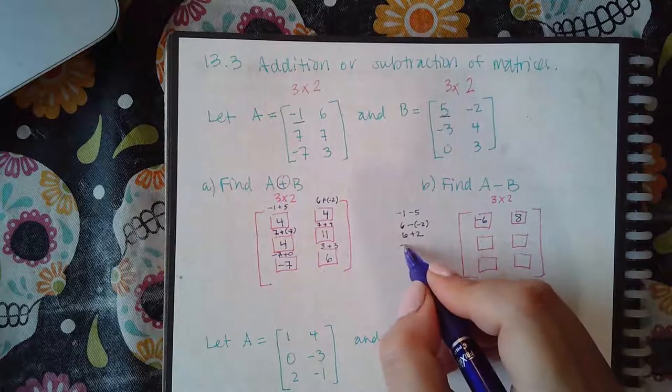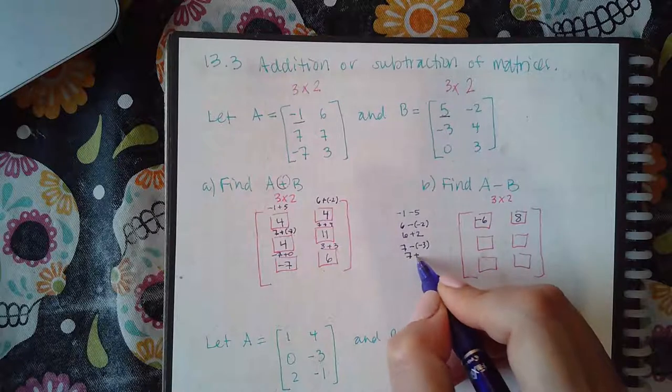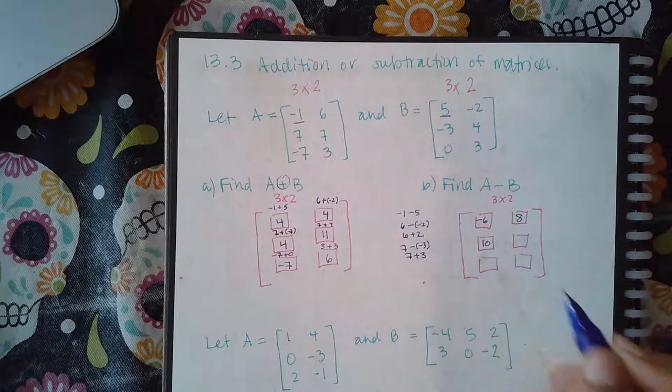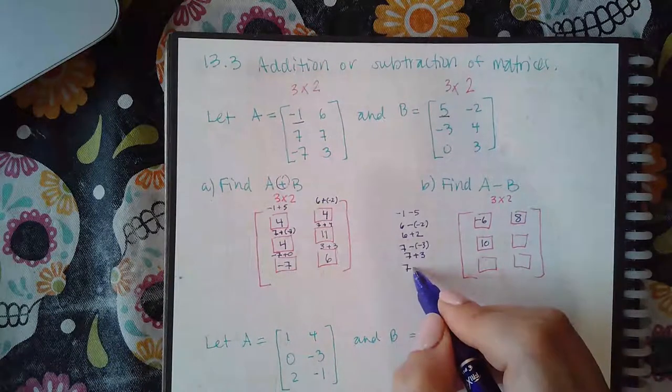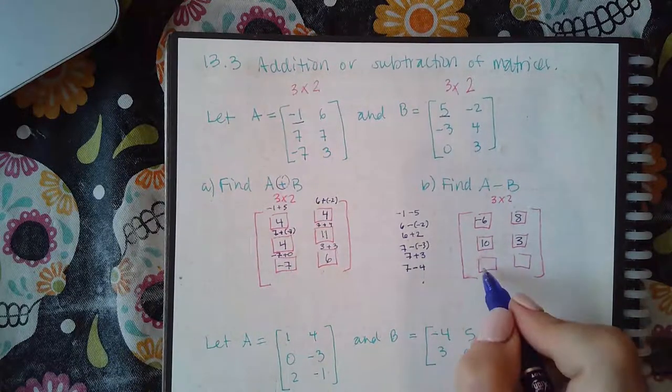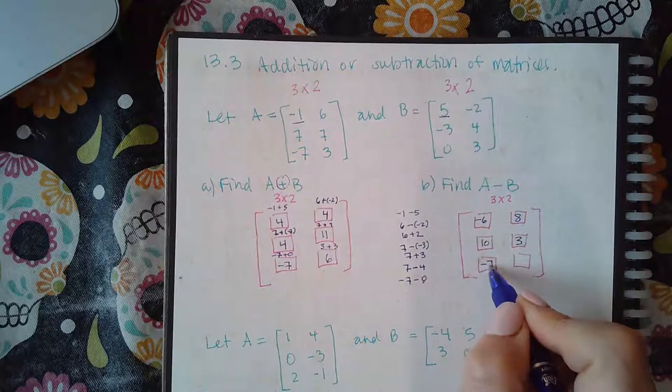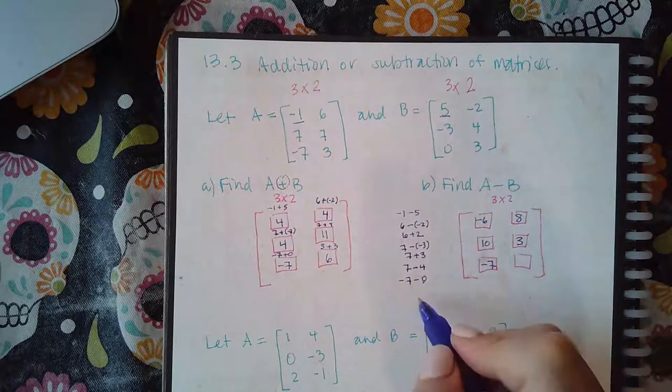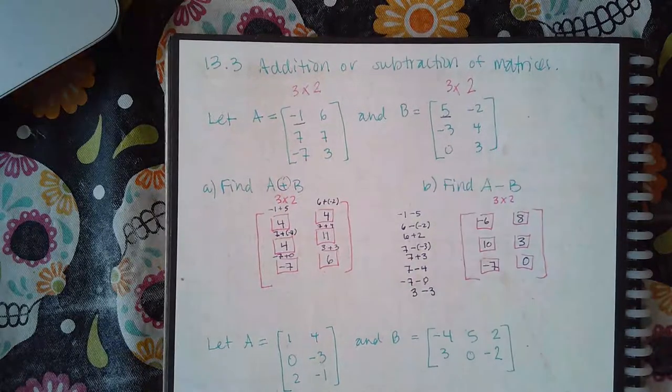Then, for this entry, it's going to be seven minus a negative three, which becomes seven plus three, so this will be a ten. Then, for this spot, it will be a seven minus four, which is just three. For this spot, it'll be negative seven minus zero, which is still negative seven. And, for the last entry, it'll be three minus three, which is zero.